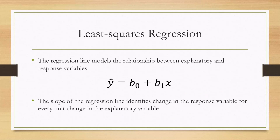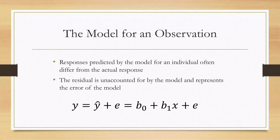Recall that the regression equation uses y-hat rather than y because what we predict differs from what we observe. Now that we've discussed the residual, we can write it another way: the actual observation y can be thought of as what we predict plus the unexplained part. So taking the regression equation — b0 plus b1 times x, where b0 is the intercept and b1 is the slope — and adding the unexplained part e gives us the actual observation y.